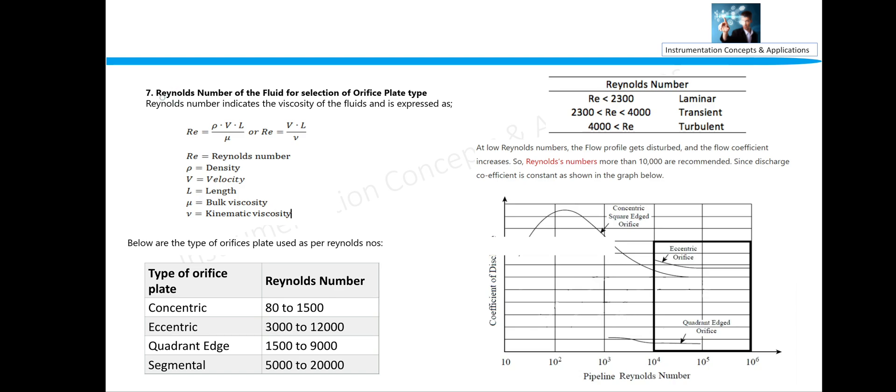Reynolds number of the fluid for selection of orifice plate. Reynolds number actually is the density divided by viscosity. How viscous is the fluid?